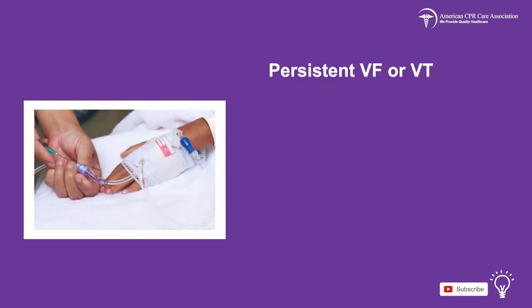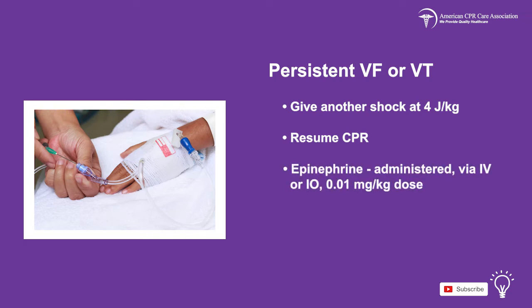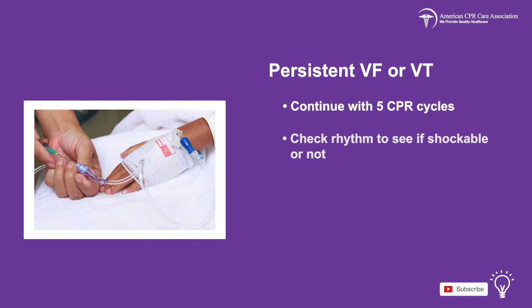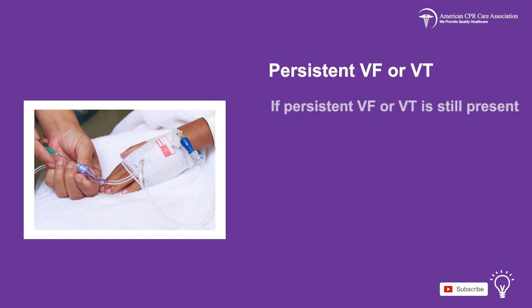If the child has persistent VF or VT, give them another shock at 4 joules per kilogram, then resume CPR. Administer epinephrine via IO or IV access at a dose of 0.01 milligrams per kilogram and repeat every 3 to 5 minutes. Then perform 5 cycles of CPR and check the rhythm again. If persistent VF or VT is still present, give another shock at 4 joules per kilogram and continue CPR.